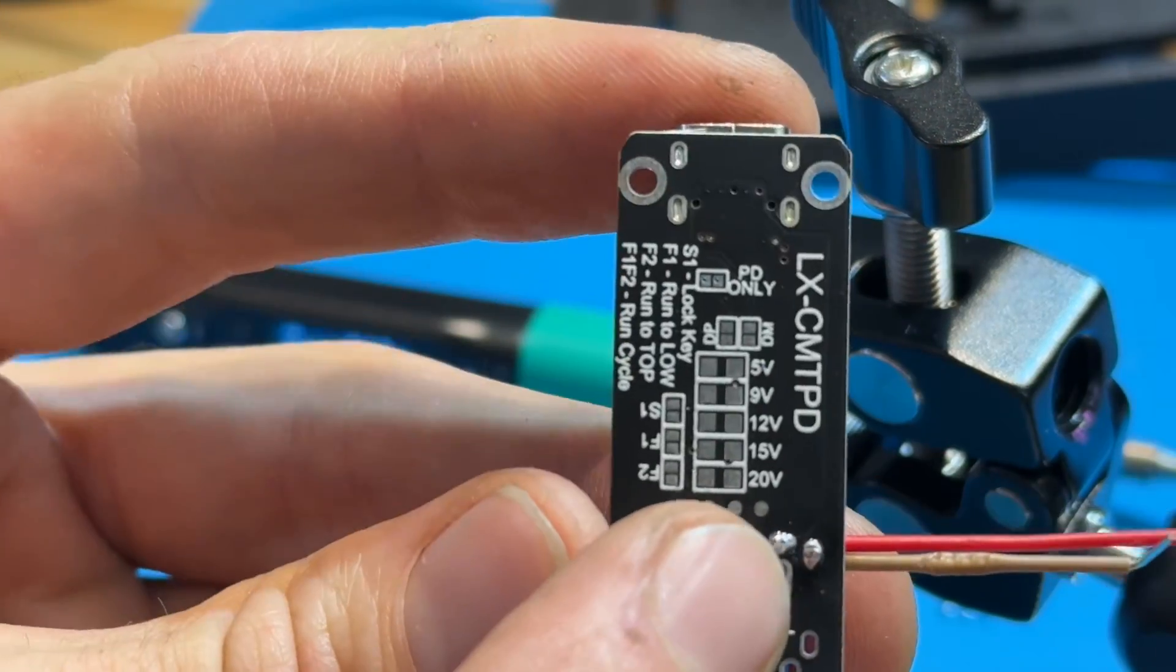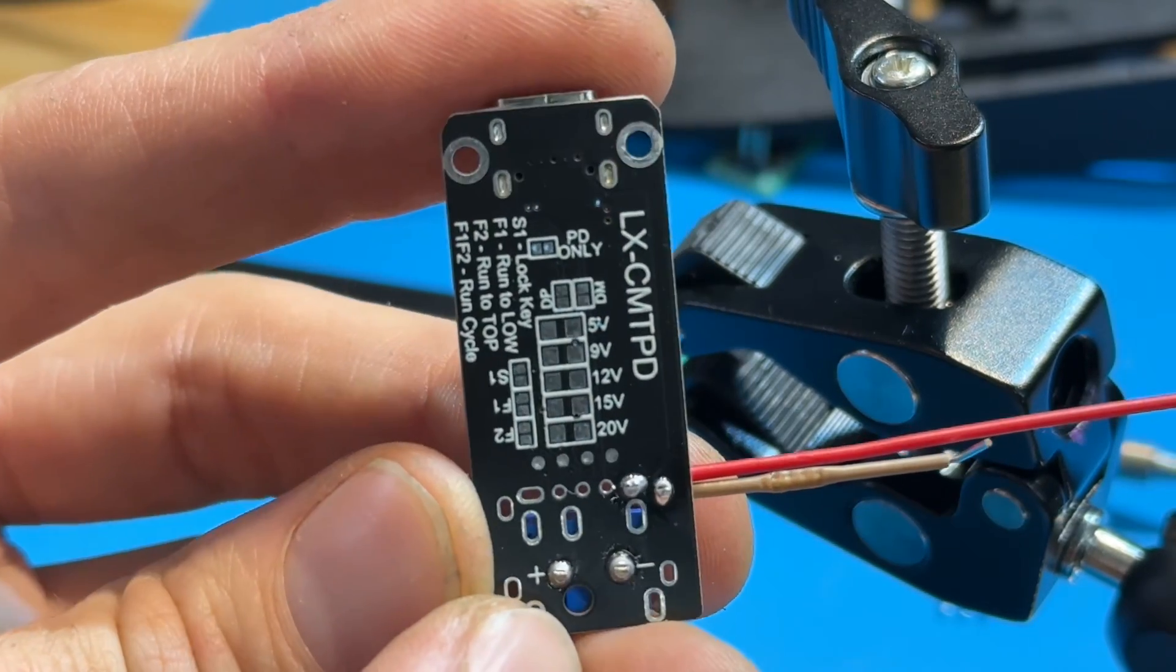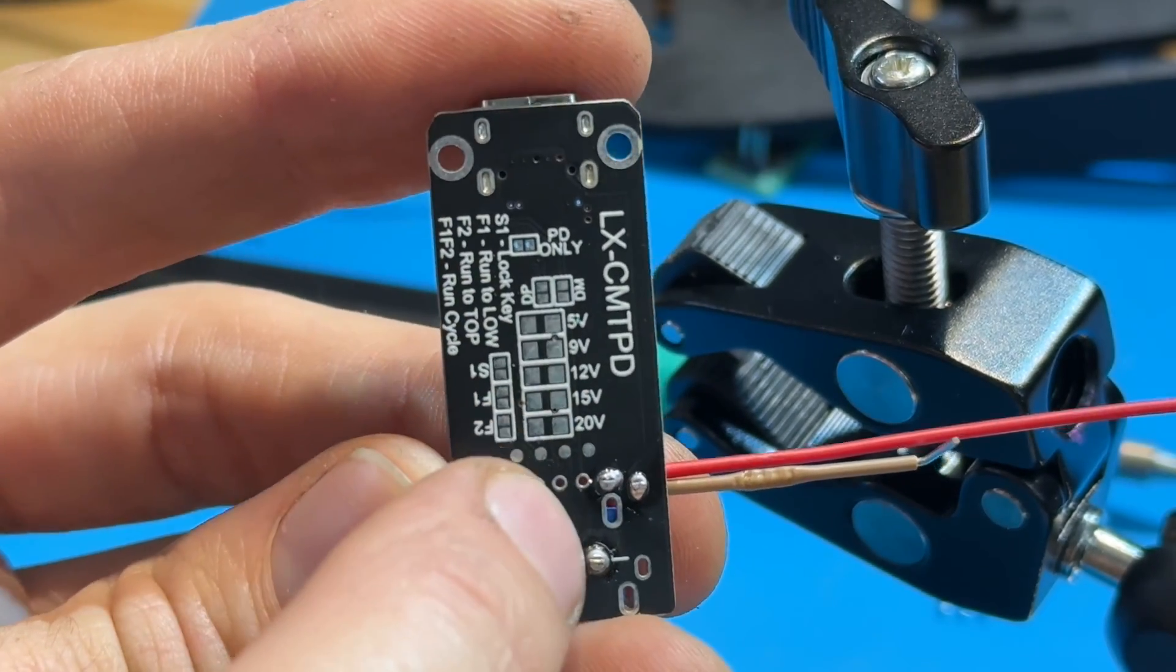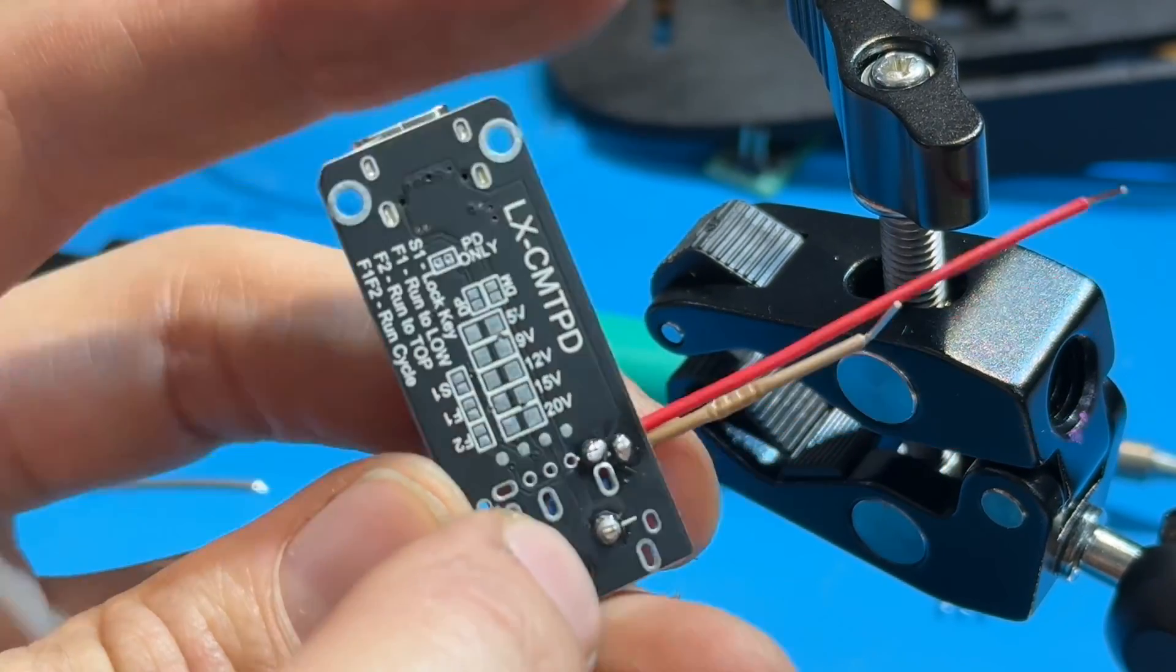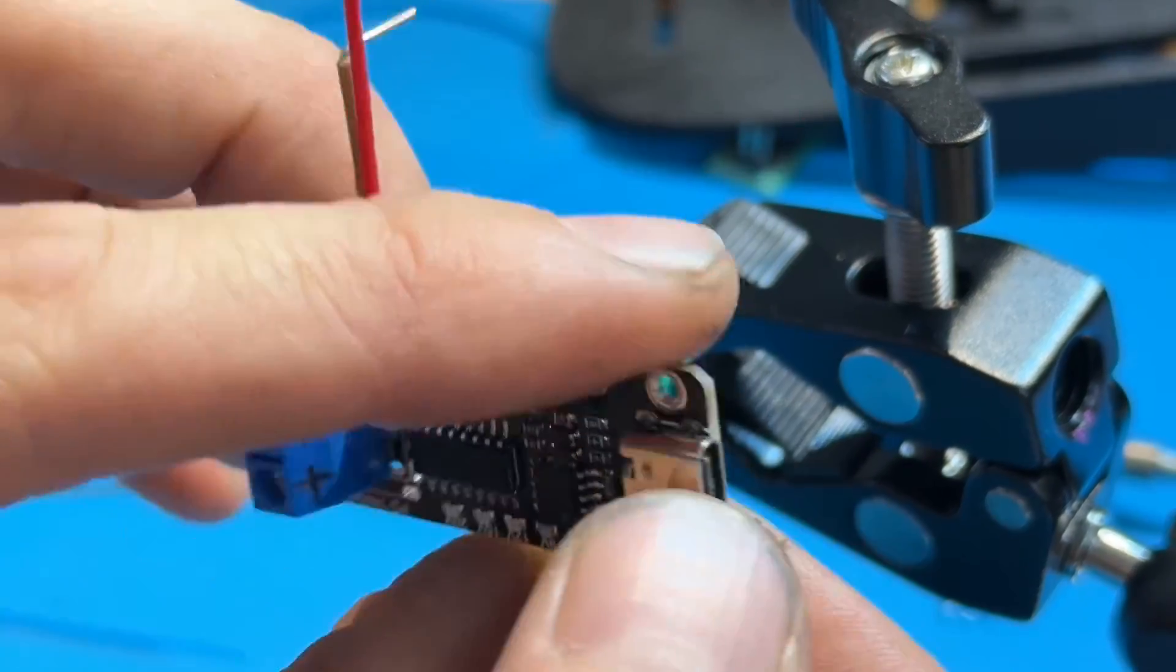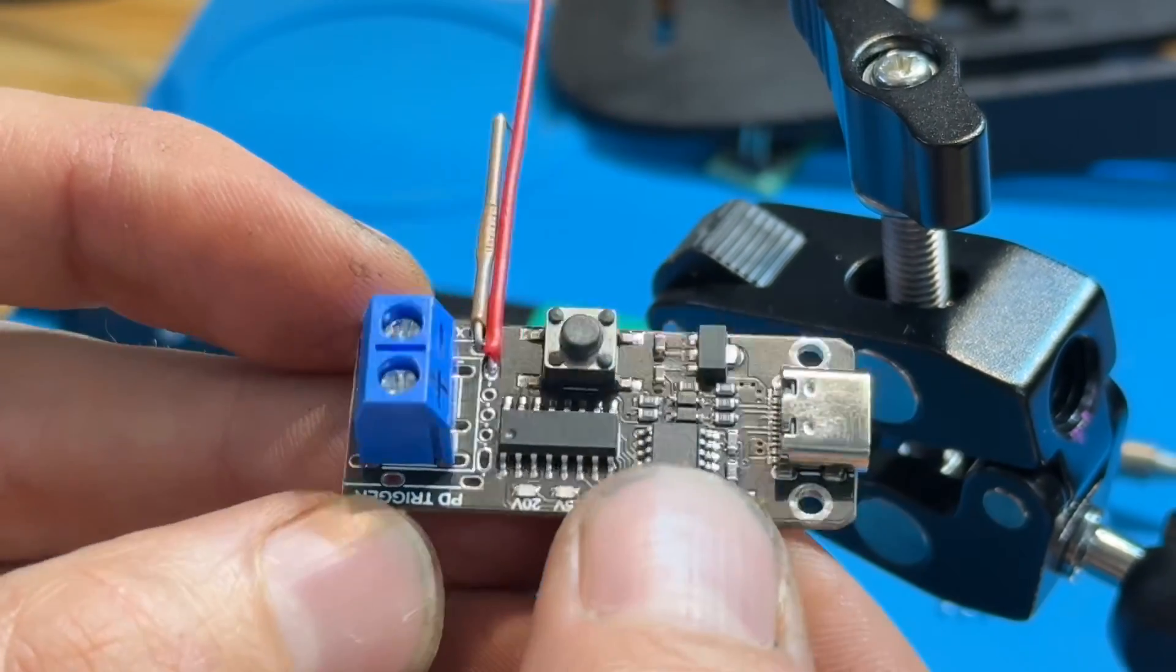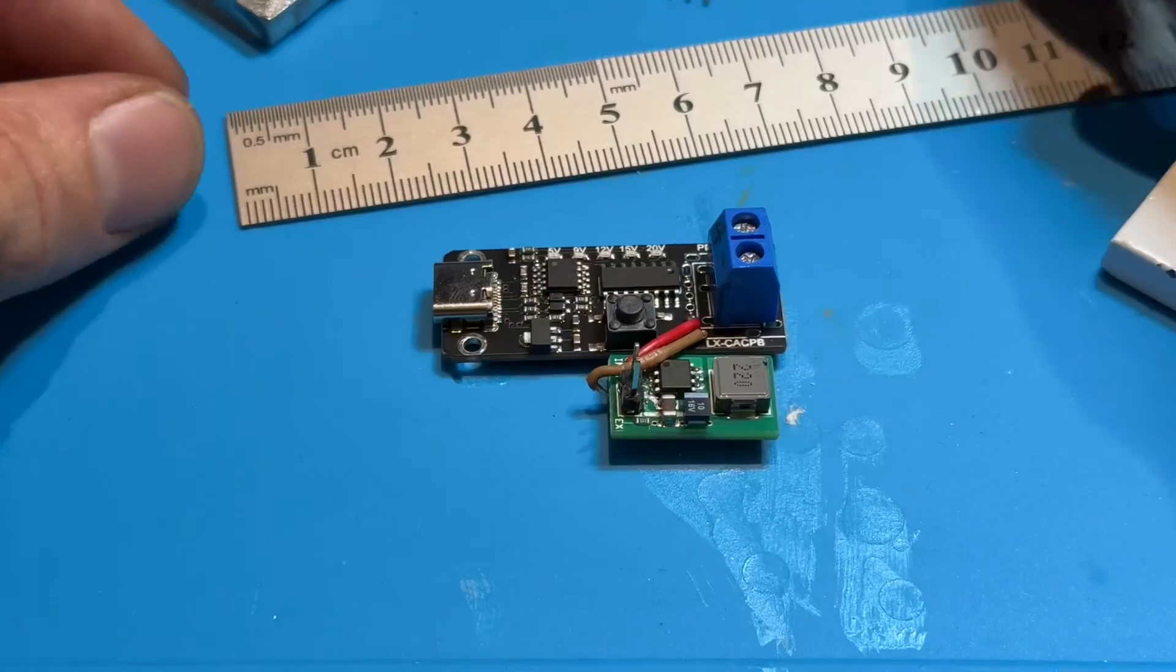A lot of information on this board. You can lock it into one of the voltages just by adding a resistor on one of these. So much functionality. This is only, I think it's about $8, 16 bucks for two.